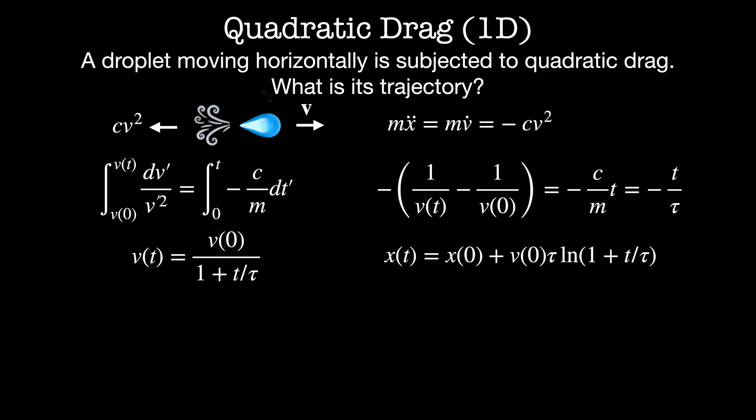So now let me plot both of these. For velocity I start at v naught and it decays to 0 as 1 over t divided by tau. So this is slower than the exponential decay that we just saw. For the trajectory let's start at position x naught and this function now has logarithmic growth. So eventually I'll be able to reach infinitely far away but it'll take me logarithmically long to get there.